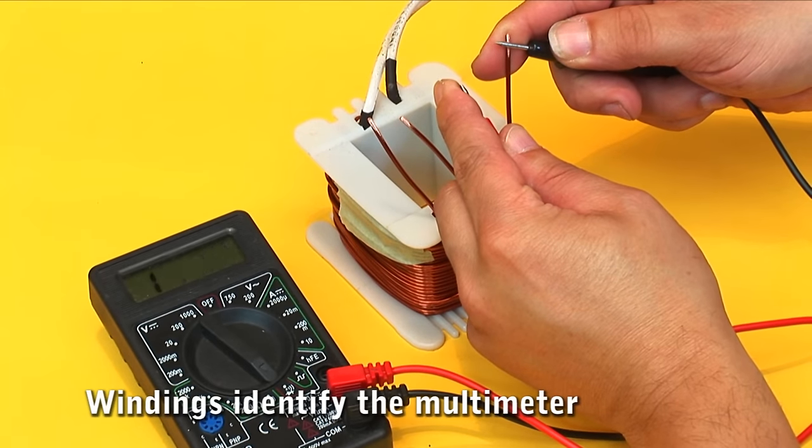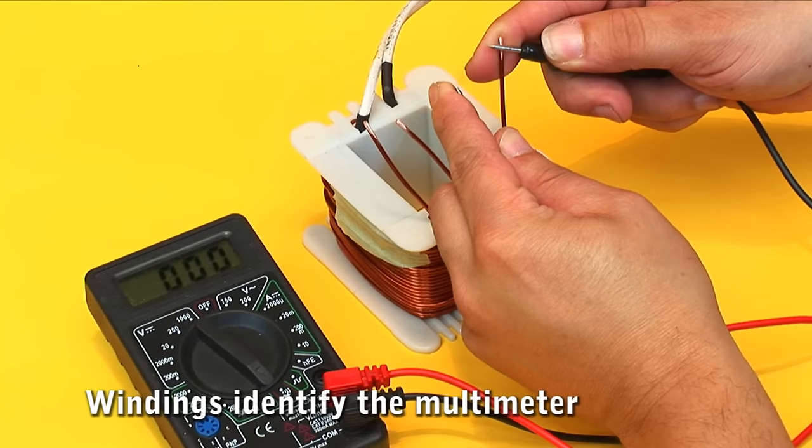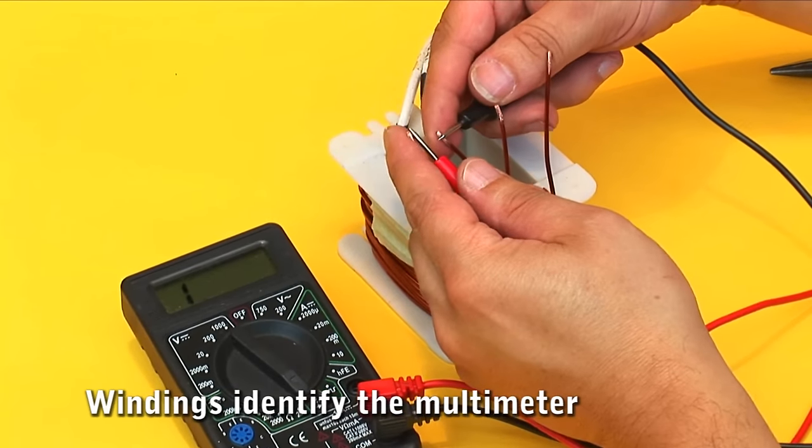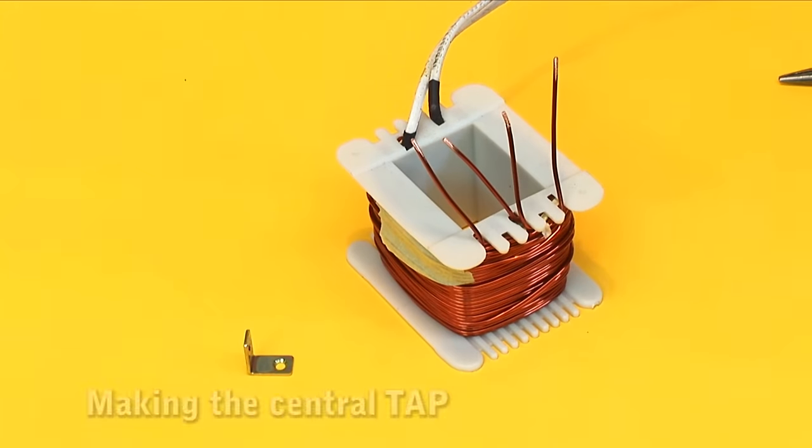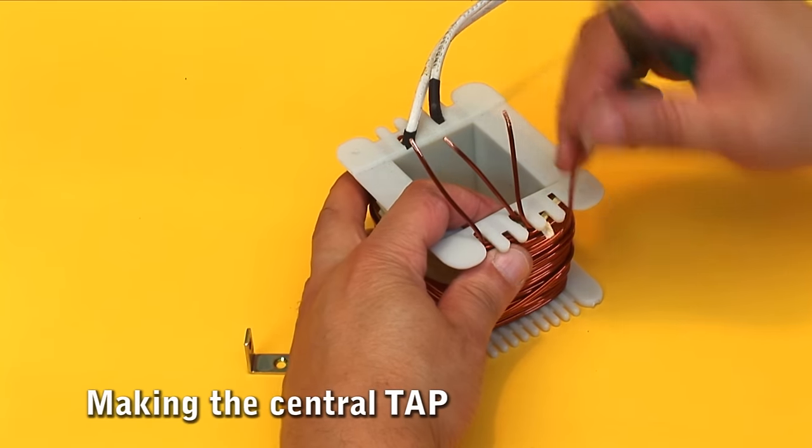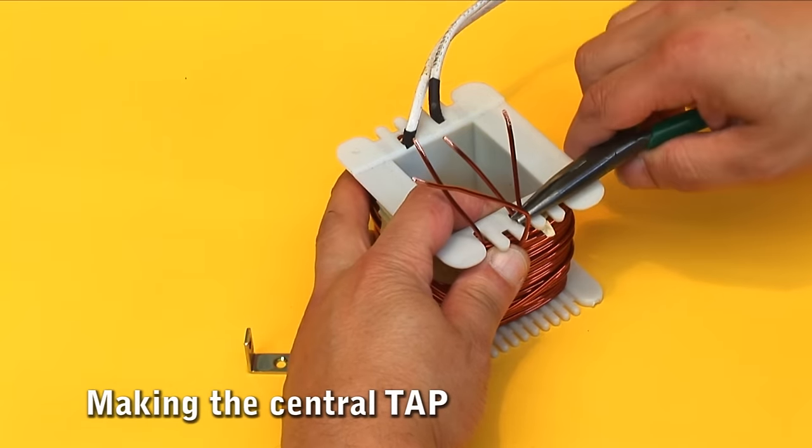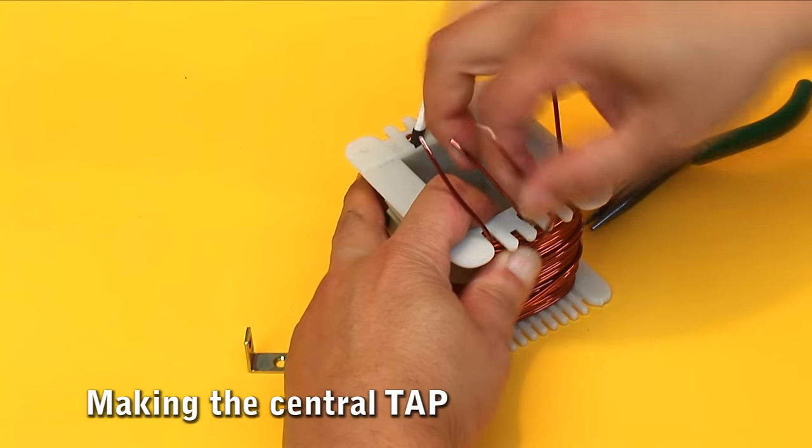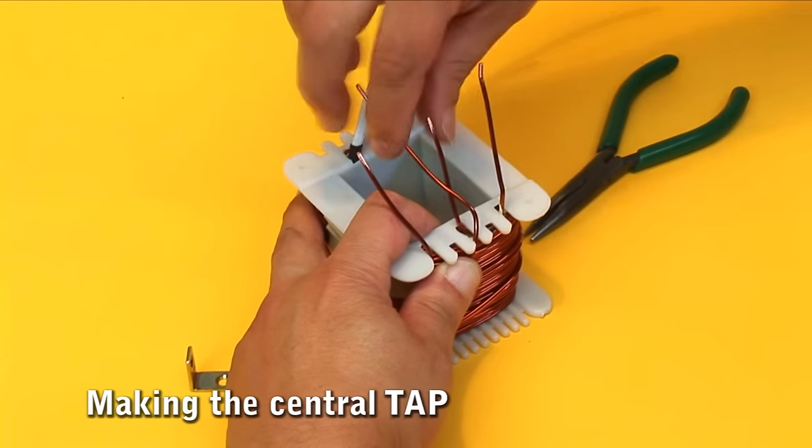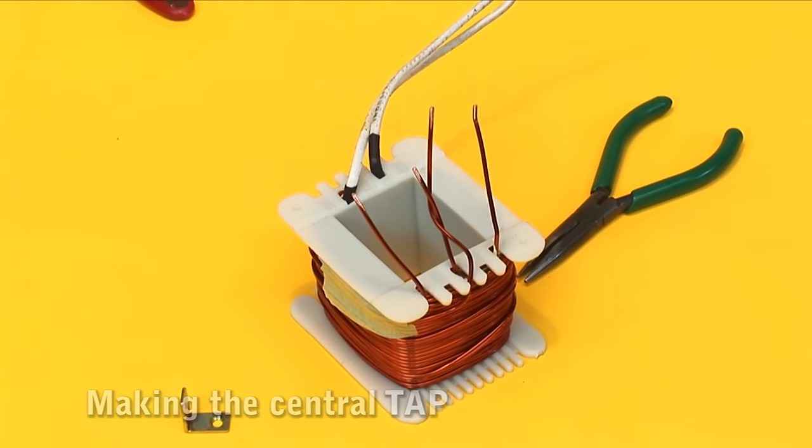Detecting the central tap of the transformer center point. We must identify the ends of the windings, measured continually with the multimeter. It is necessary to join the leading edge of one winding with the tail of another winding. The starting point of a secondary winding must be together with the tail end of the other secondary winding, thus forming the central tap.